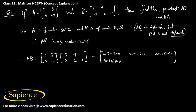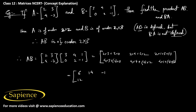The element in the second row and second column is 4×4 plus (-2)×2. The second row and third column is 4×1 plus (-2)×(-1). The final result gives: first row [6, 14, -1] and second row [12, 12, 6]. This is the required product AB.